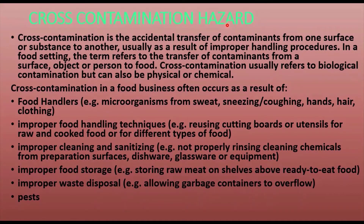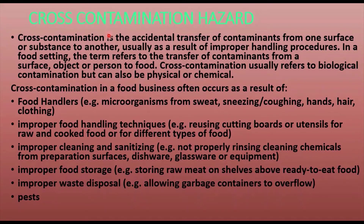Moving to the cross contamination hazard. Cross contamination is the accidental transport of contaminants from one source, surface, or substance to another, and is usually the result of improper handling procedures. In a food setting, the term refers to the transfer of contaminants from a surface, object, or person to food. Cross contamination usually refers to biological contamination but can also be physical or chemical. For example, you should not handle both vegetarian and non-vegetarian food at the same time, as there is a chance of cross contamination.